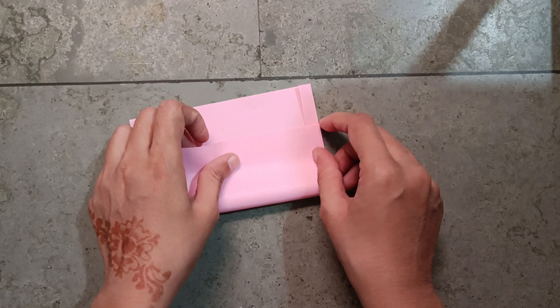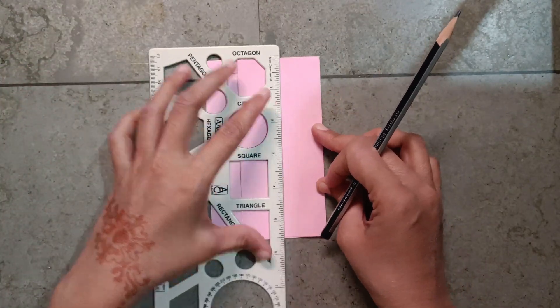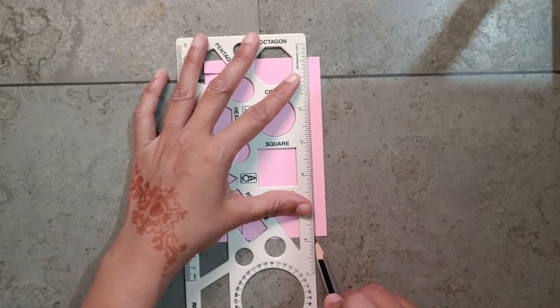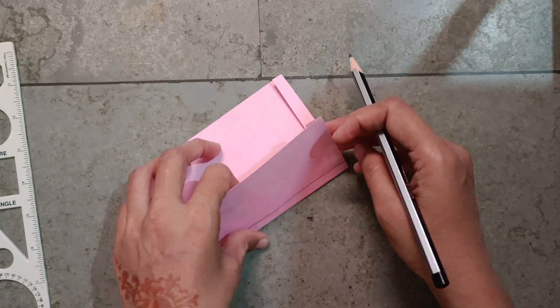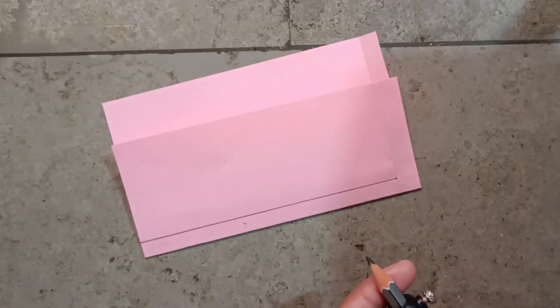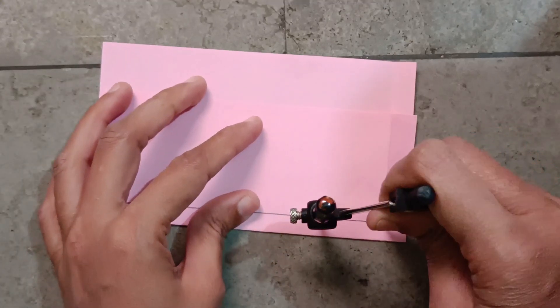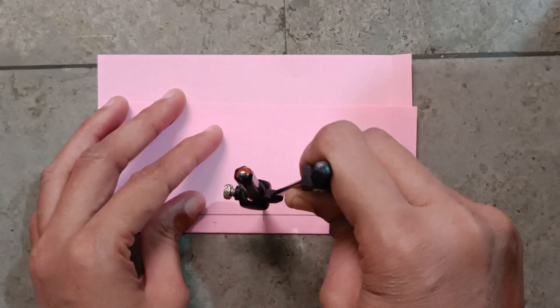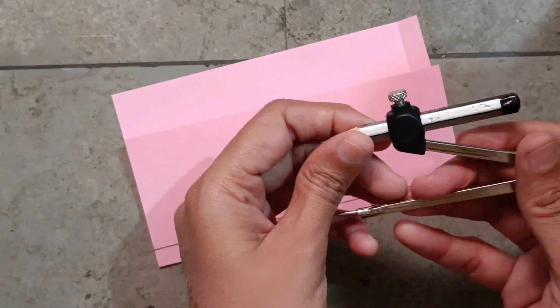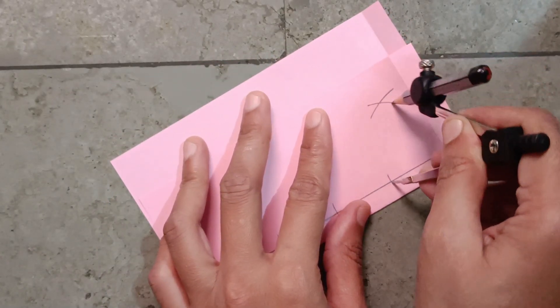You can take the height as much as you want. Make a line from here. Open it. You can keep any measurement. Make marks like this - one, two, three, and four. Take any measurement. Make a curve like this.